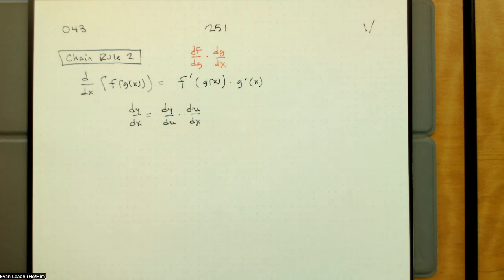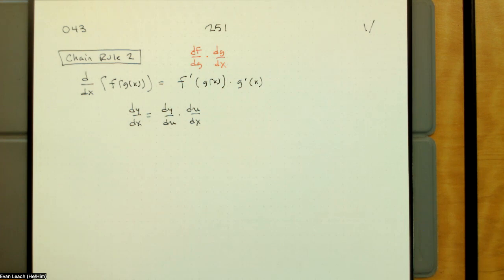You would multiply those: 12 inches per foot times three feet per yard. The feet cancel out, 12 times three is 36 inches per yard.